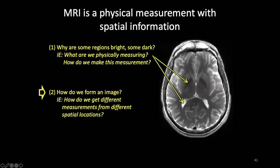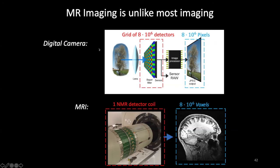That was the discussion on contrast mechanisms — how we get different brightnesses throughout an image. Now I'm going to briefly go over how we form an image, specifically how we get different measurements from different spatial locations. When we think of imaging from a digital camera, we tend to have a grid of sensors. An image is focused onto that grid, and each sensor carries some spatial information. If we read out from this grid and project onto a display, we get a one-to-one relation from sensor element to pixels in the image — this is how a typical digital camera works.